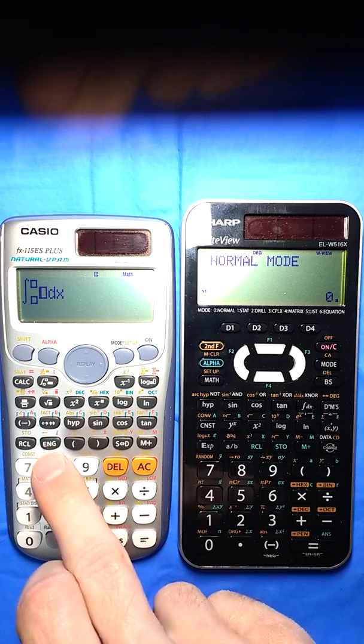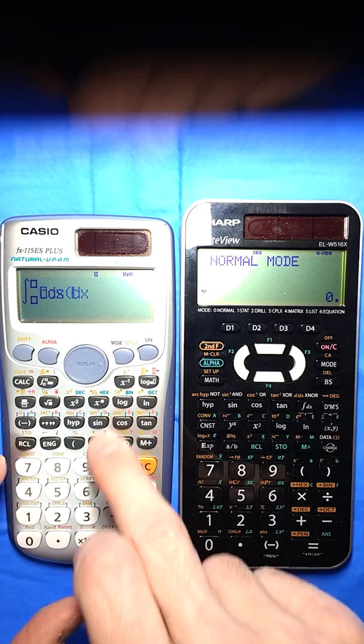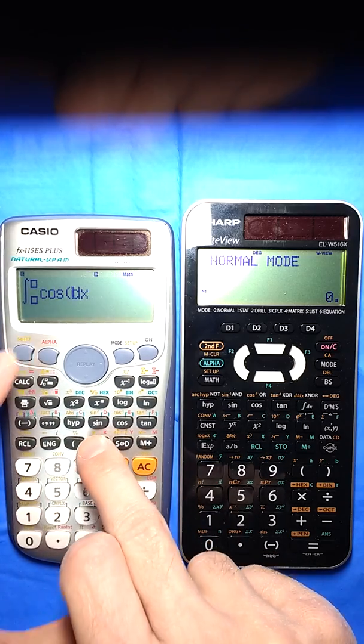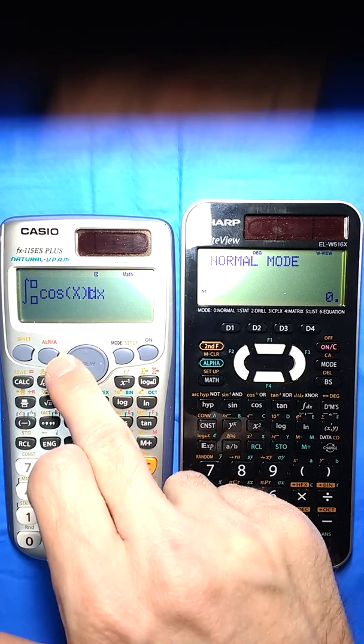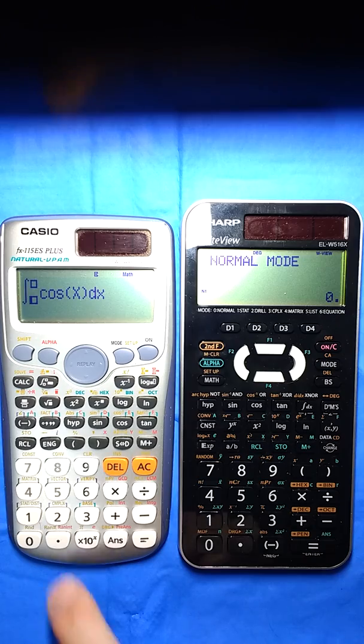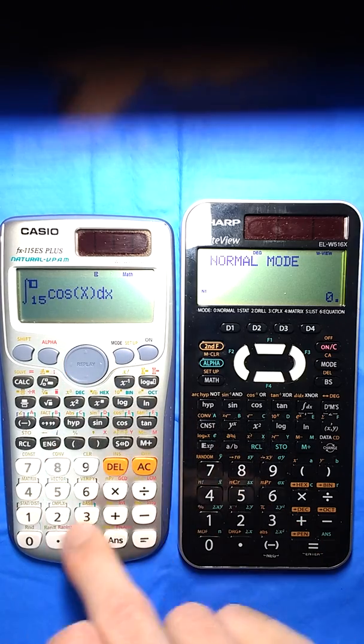I hit the integration button. I'm going to do cosine, and I am in degree mode, so I'm going to do cosine of x. And I need to give it, I'm going to go from 15 to 75 degrees.